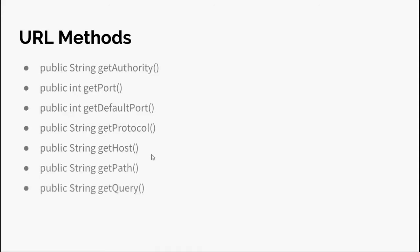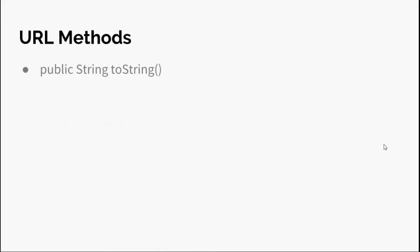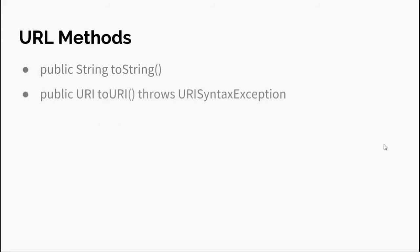getPath() returns the path of the file or resource. getQuery() returns the query part of the URL. getFile() returns the combination of getPath() and getQuery() — path first, then query appended. getRef() returns the anchor part of the URL. The protected setter method set(String protocol, String host, int port, String file, String reference) creates a URL from all these parameters. toString() returns the string representation of the URL object.